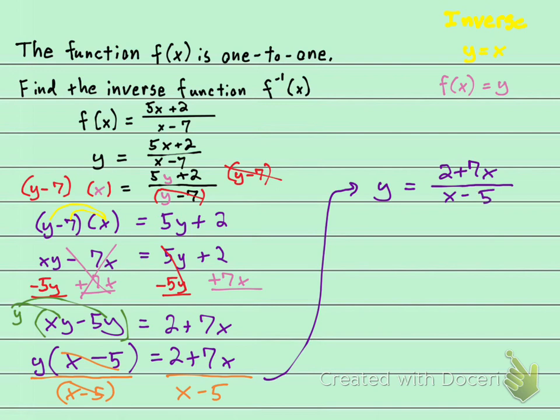And I'm just going to leave it just like that. I don't need to try to do anything else to this fraction on the right, this rational expression. And that is my inverse. 2 plus 7x over x minus 5. And you can leave it like that. I always put a box around my answer.